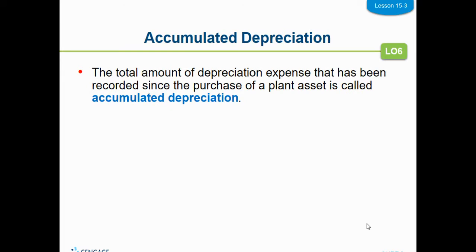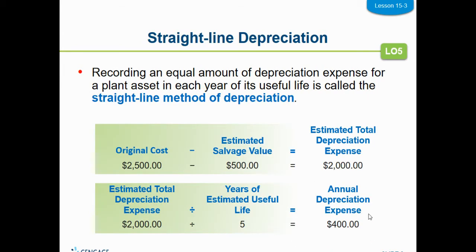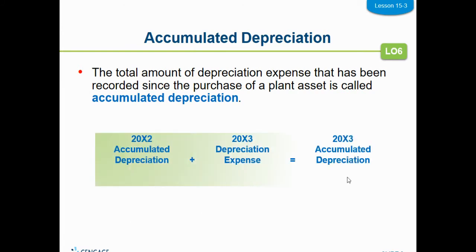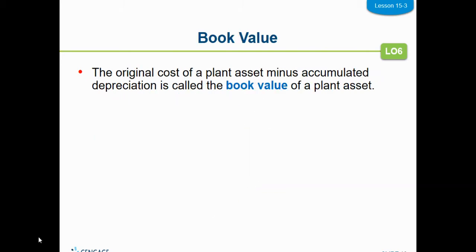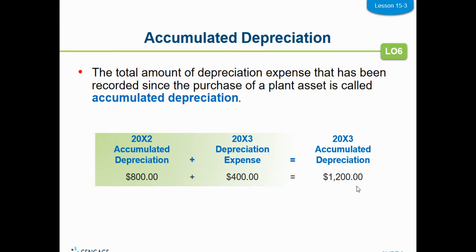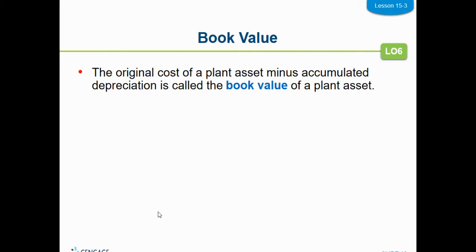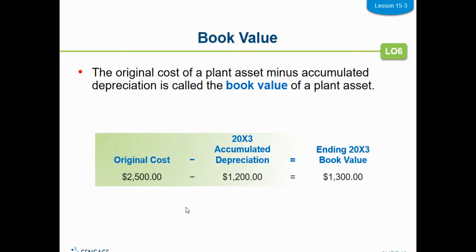Accumulated depreciation is how much it grows each year. Going back to the example, you depreciate $400 the first year; the second year you depreciate another $400, so accumulated depreciation is $800. In this example, $800 of accumulated depreciation in 2002 plus the $400 for the next year — so after two years. Then in the third year you're adding in the $400 again, so accumulated depreciation is $1,200. The original cost of the plant asset minus the accumulated depreciation is called book value. After year three, you've accumulated $1,200, so the ending book value is $2,500 minus $1,200 equals $1,300.